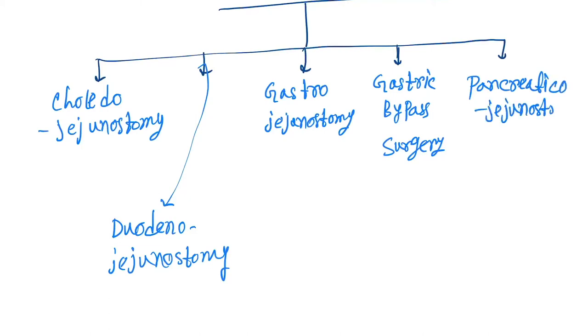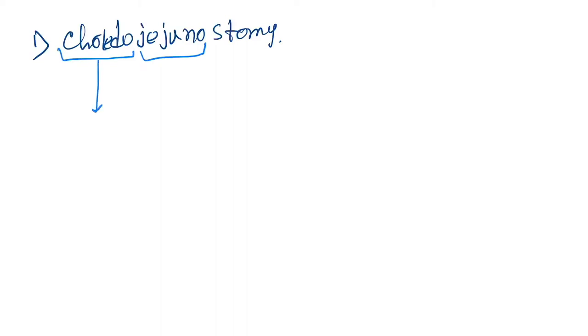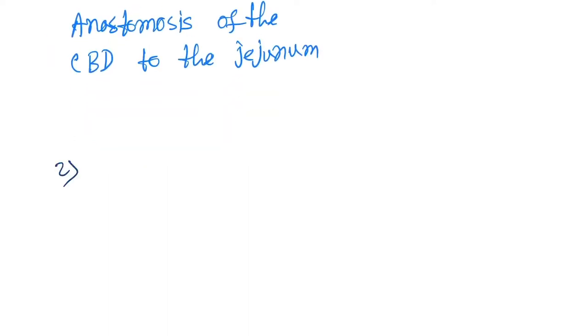The first type is choledochojejunostomy. 'Choledocho' refers to the common bile duct, and 'jejuno' refers to the jejunum. So this is creating an anastomosis of the common bile duct to the jejunum.